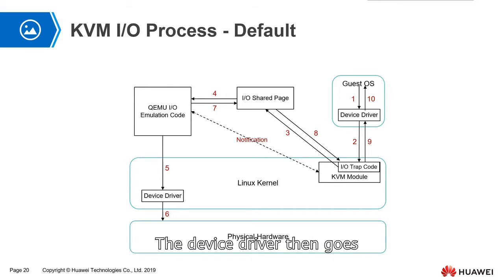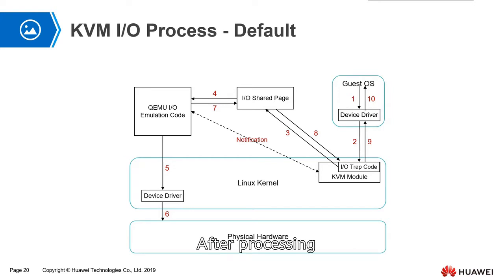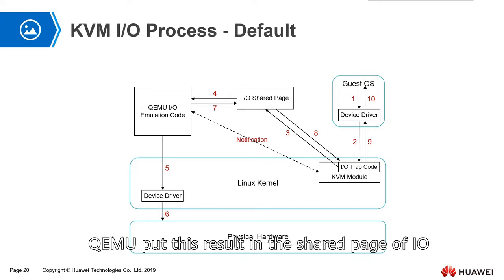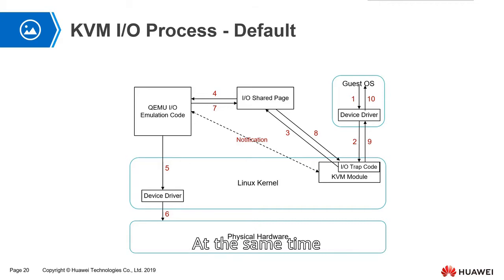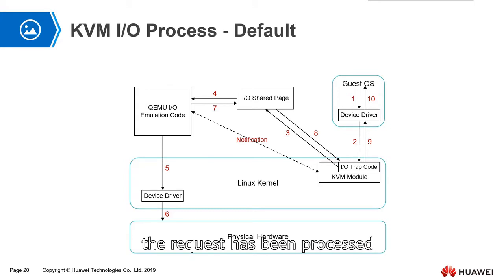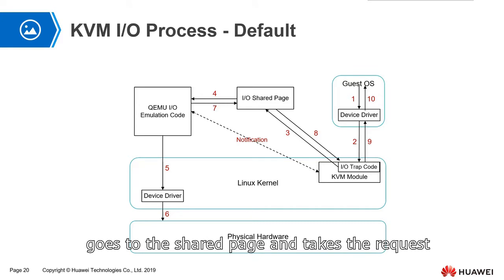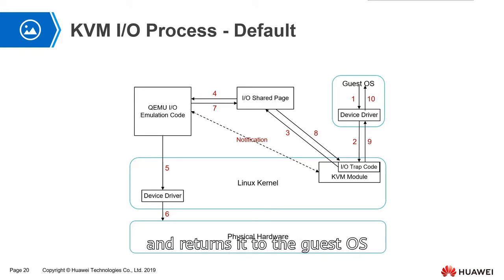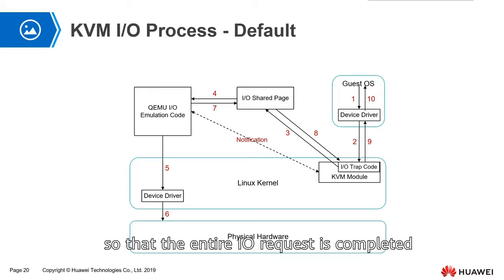Then it simulates according to the IO request and sends the request to the real device driver. The device driver then goes to the physical hardware to process the IO request. After processing, QEMU puts the results in the IO share page, and notifies the KVM module that the request has been processed. Then the KVM module goes to the share page, takes the result, and returns it to the guest OS, completing the entire IO request.